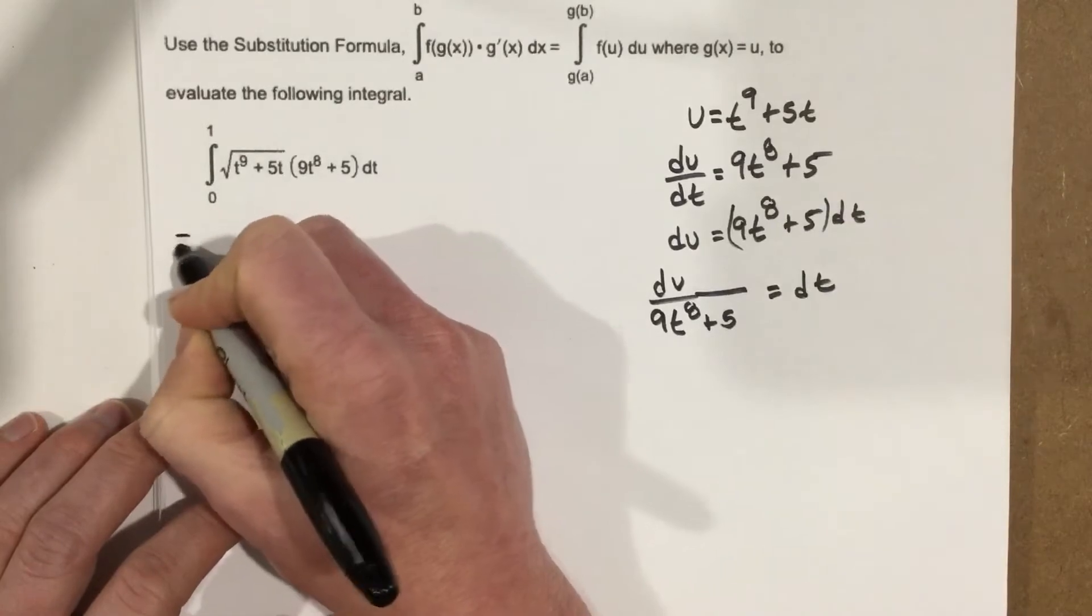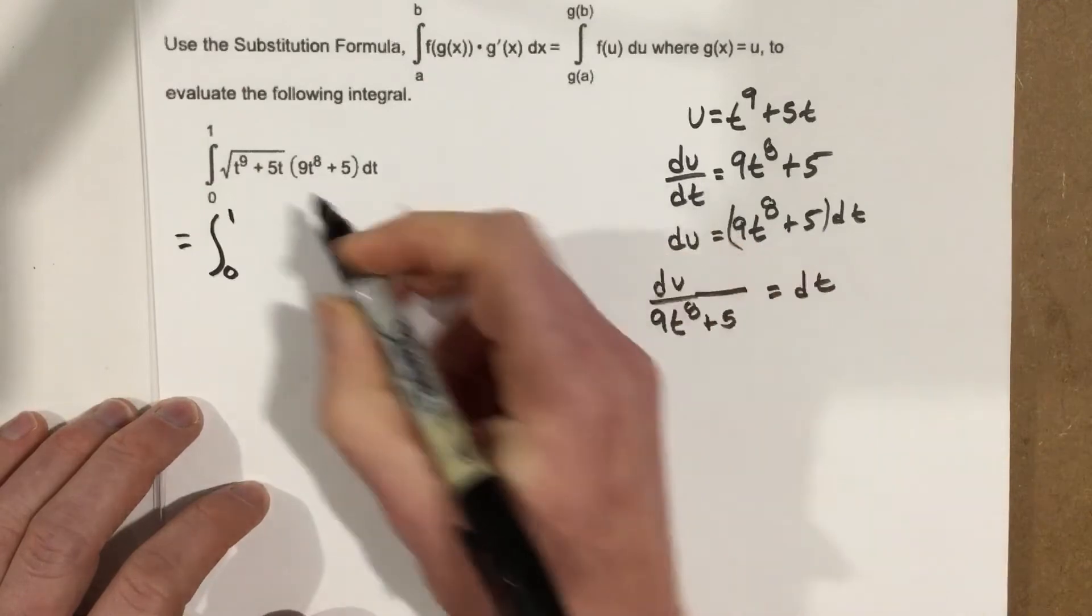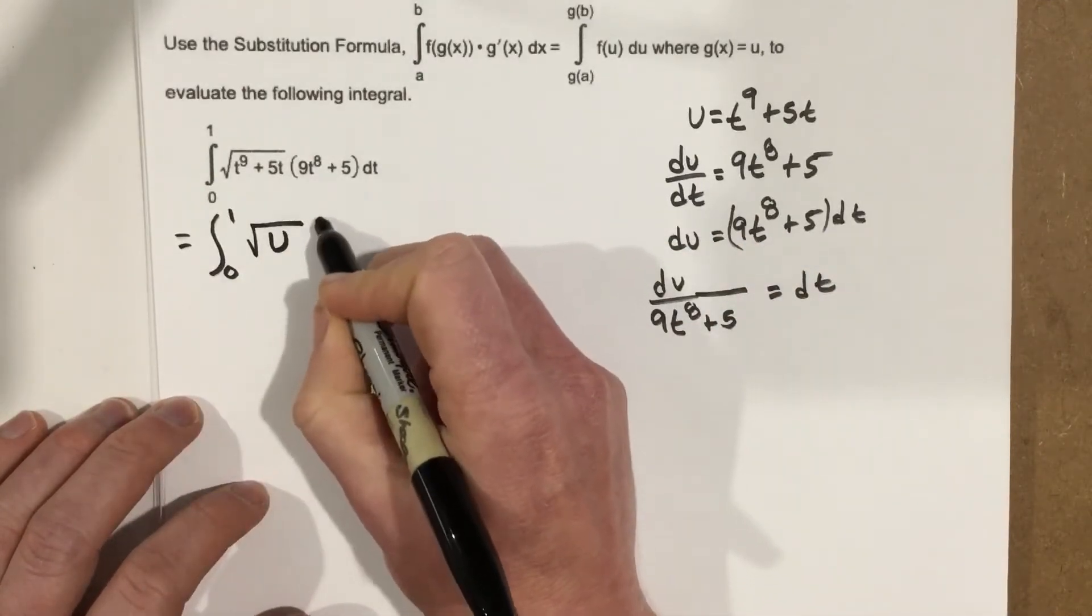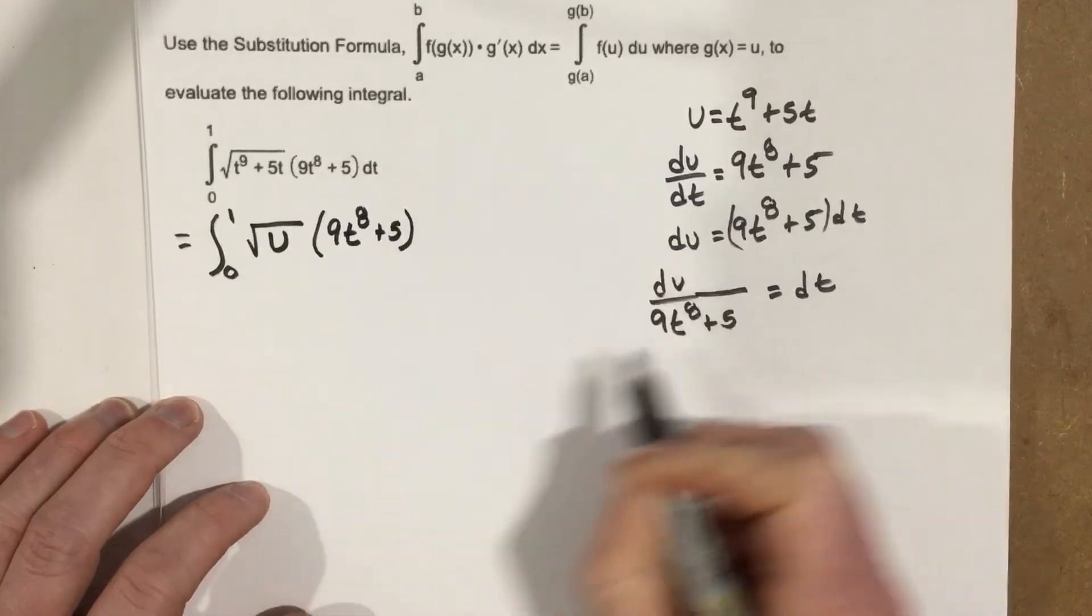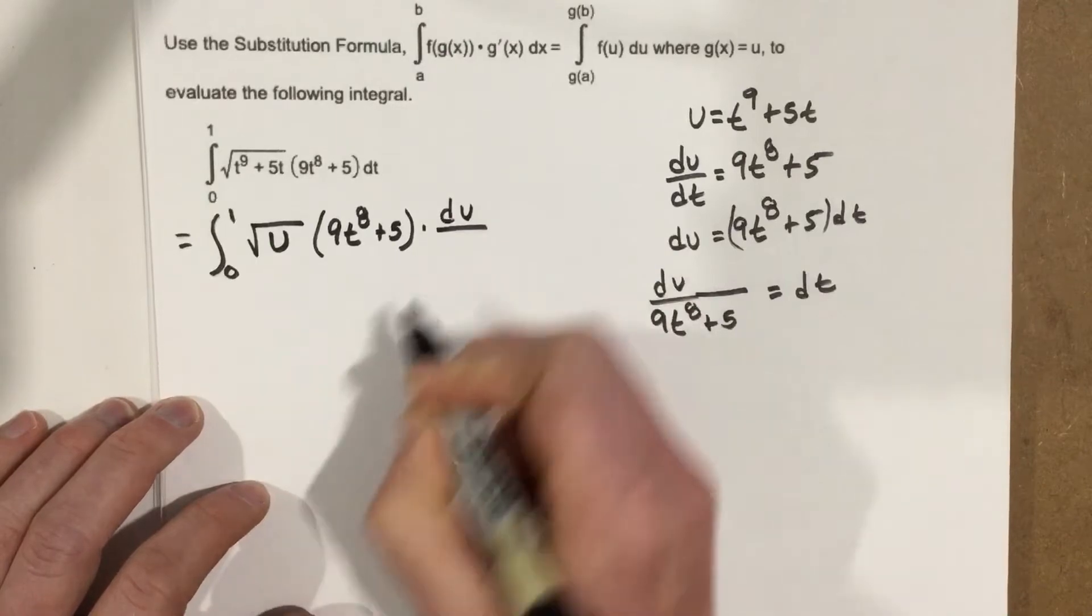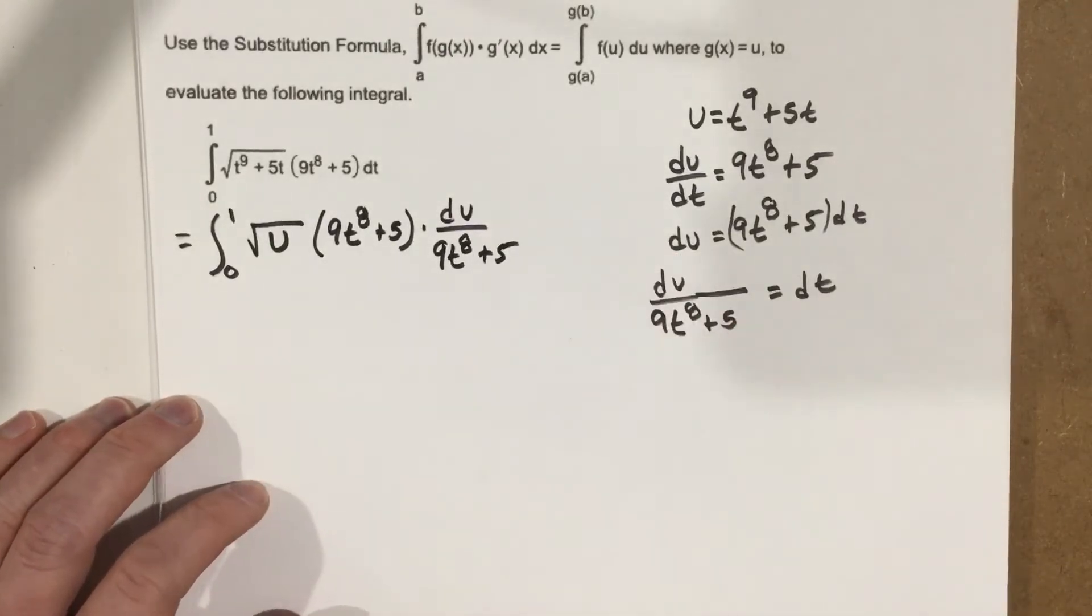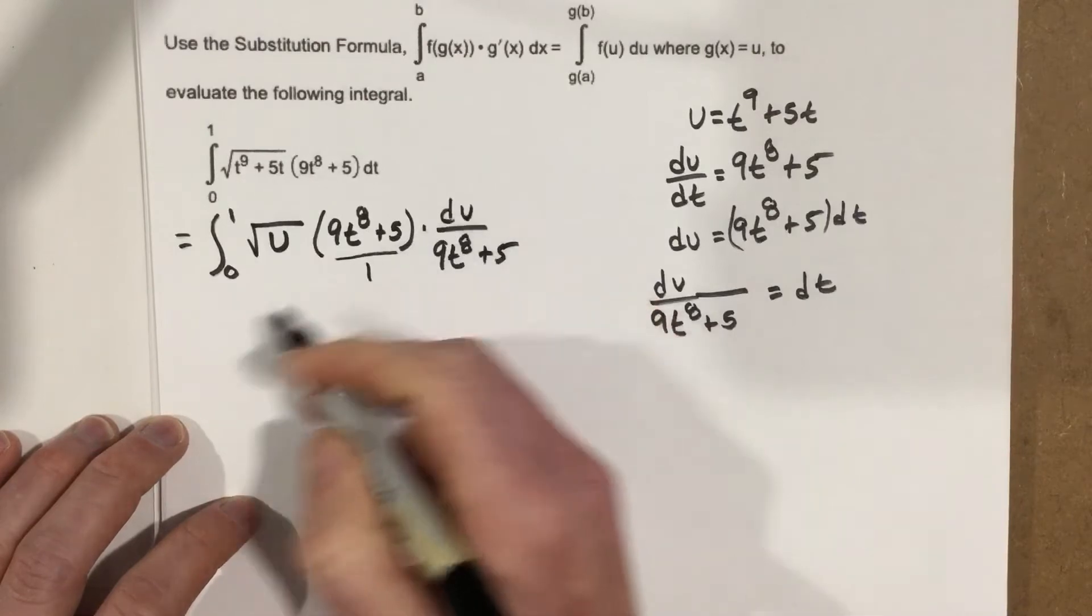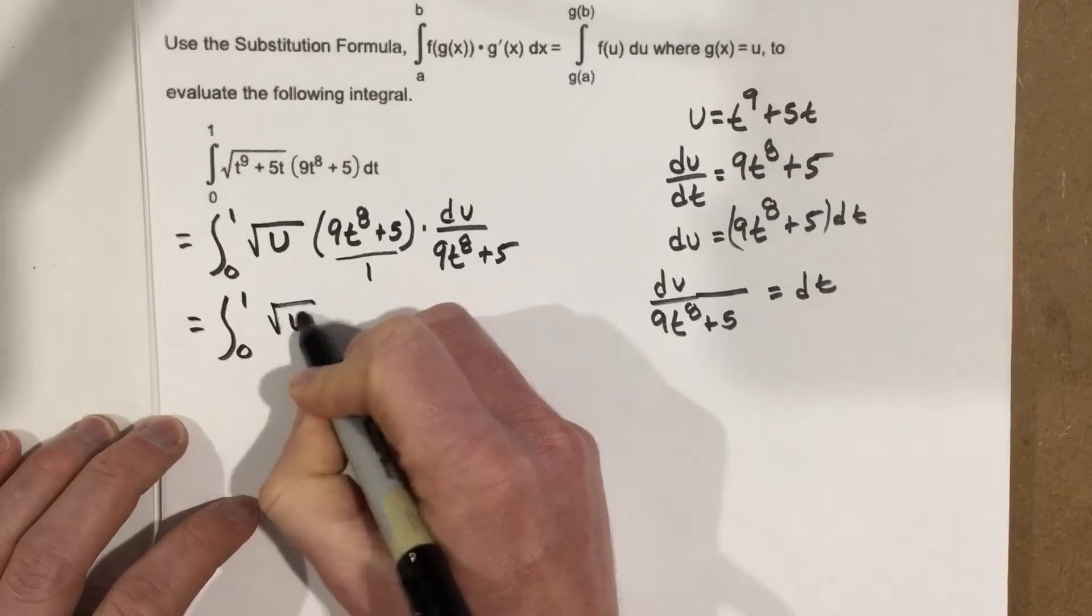So we can actually go through and start to write this integral with our different substitutions. So we have a root u, and then we have this times 9t to the 8th plus 5, and then we substitute dt with our du over 9t to the 8th plus 5. The 9t to the 8th plus 5, they're going to cancel there and leave us with du, so we end up with integral 0 to 1 root u du.